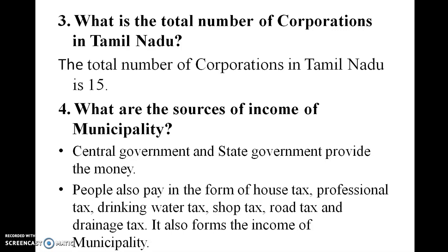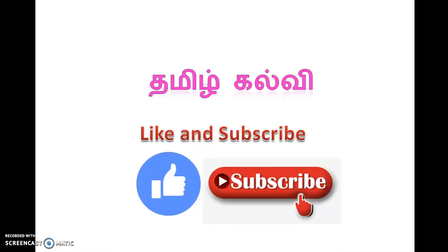What is the total number of corporations in Tamil Nadu? The total number of corporations in Tamil Nadu is 15. What are the sources of income of municipality? Central government and state government provide the money. People also pay in the form of house tax, professional tax, drinking water tax, shop tax, road tax, drainage tax, and property tax. Thank you for watching. Please like and subscribe.